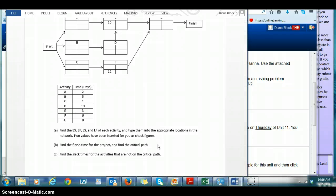Then because there are some slack times, there are some activities that are not on the critical path. So you're going to look and find out what those slack times are. So all of this is in chapter 11.